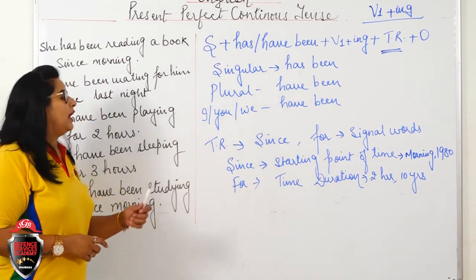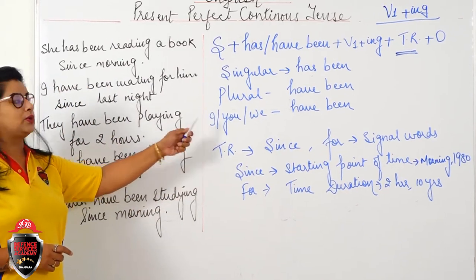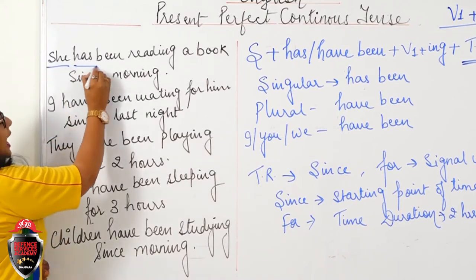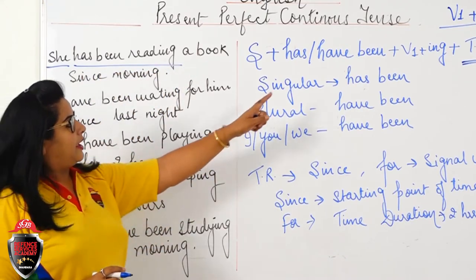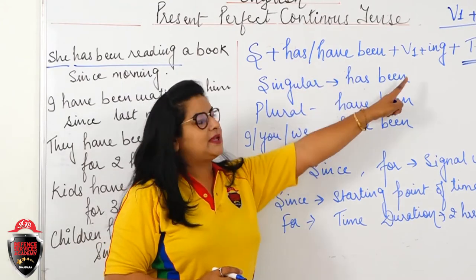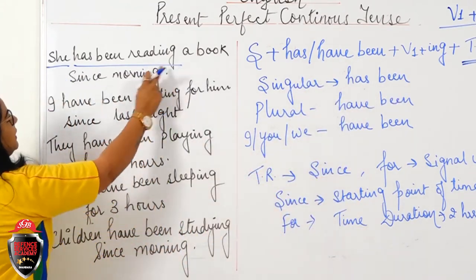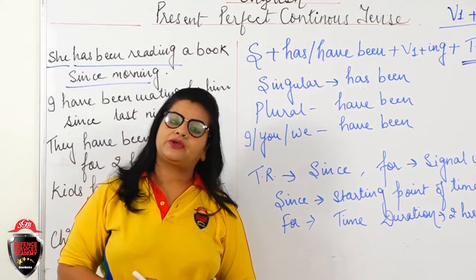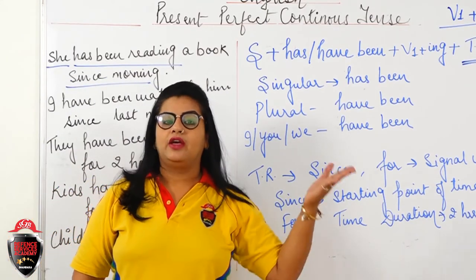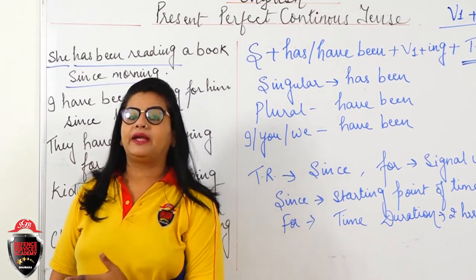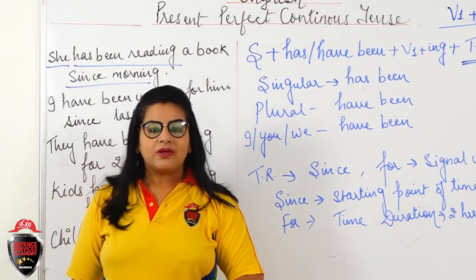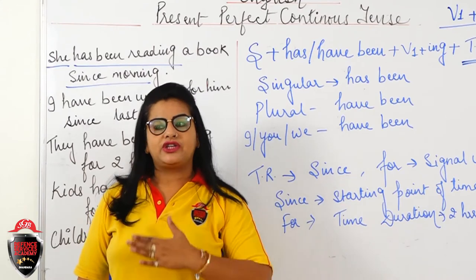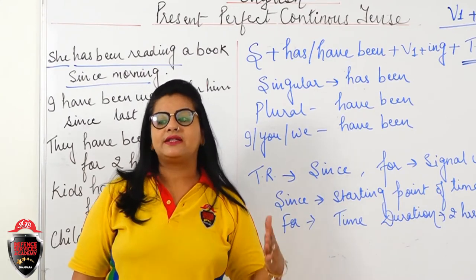Now some examples on this rule. 'She has been reading a book since morning.' Subject is 'she,' has been, plus V1 ING — reading. Since morning means she started reading in the morning and is still continuing. An action which was started in the morning and is still continuing.